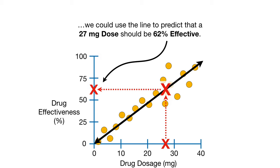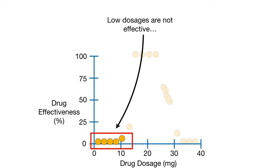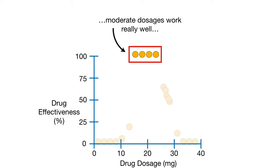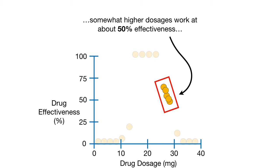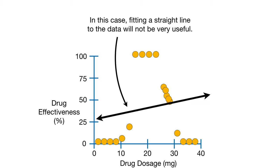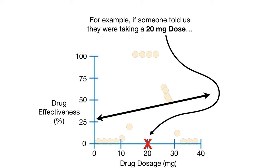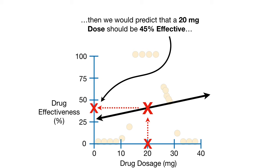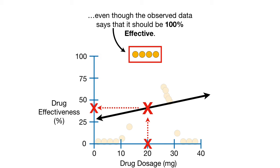However, what if the data looked like this? Low dosages are not effective. Moderate dosages work really well. Somewhat higher dosages work at about 50% effectiveness. And high dosages are not effective at all. In this case, fitting a straight line to the data will not be very useful. For example, if someone told us they were taking a 20-milligram dose, then we would predict 45% effectiveness, even though the observed data says it should be 100% effective. So we need to use something other than a straight line to make predictions.